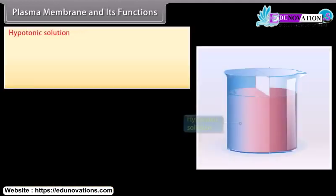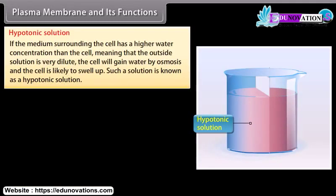Hypotonic solution: If the medium surrounding the cell has a higher water concentration than the cell, meaning that the outside solution is very dilute, the cell will gain water by osmosis.